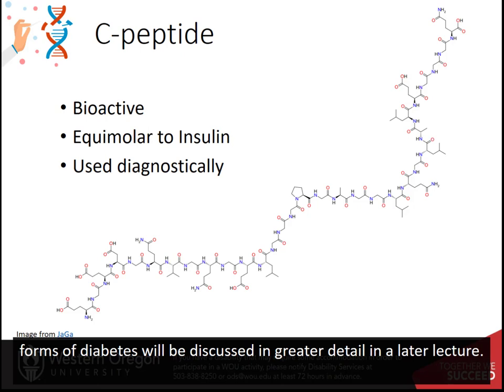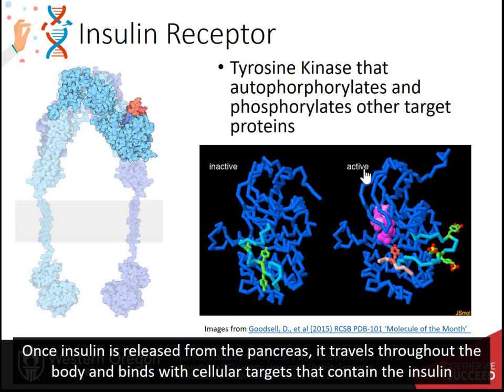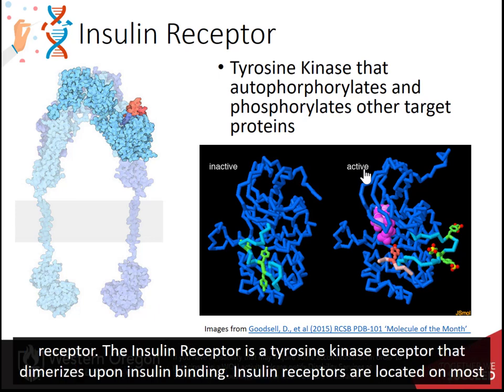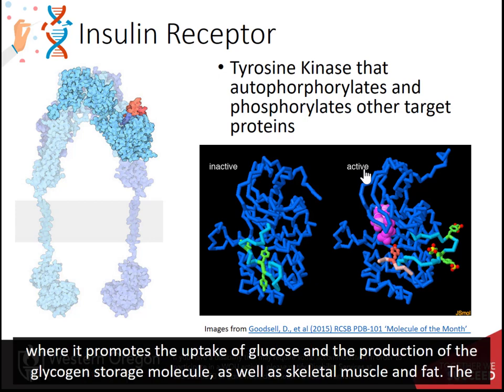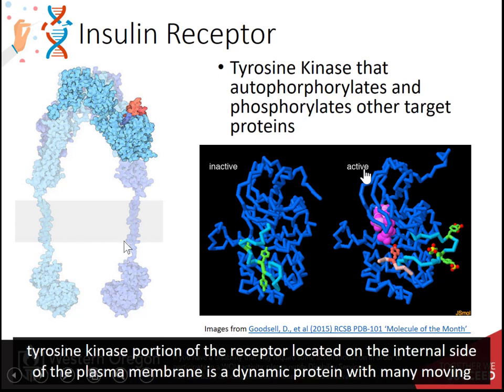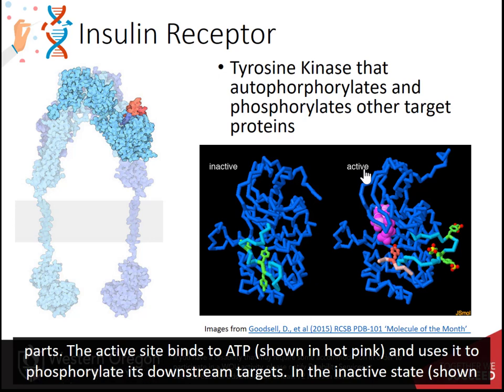Details about the different forms of diabetes will be discussed in greater detail in a later lecture. Once insulin is released from the pancreas, it travels throughout the body and binds with cellular targets that contain the insulin receptor. The insulin receptor is a tyrosine kinase receptor that dimerizes upon insulin binding. Insulin receptors are located on most cell types throughout the body, causing pleiotropic effects during insulin response. Primary targets of insulin action are the liver, where it promotes the uptake of glucose and the production of the glycogen storage molecule, as well as skeletal muscle and fat. The tyrosine kinase portion of the receptor, located on the internal side of the plasma membrane, is a dynamic protein with many moving parts. The active site binds to ATP and uses it to phosphorylate downstream targets.